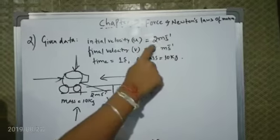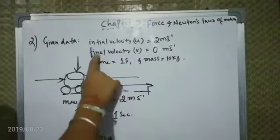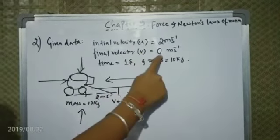Initial velocity U equals 2 m per second. Final velocity V equals 0. Time is 1 second and mass equals 10 kg.